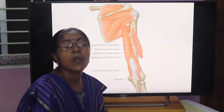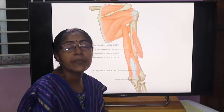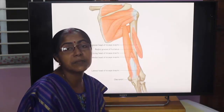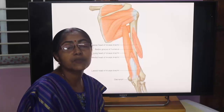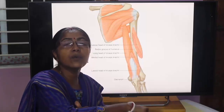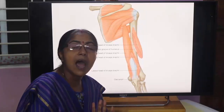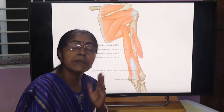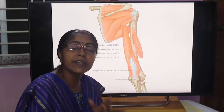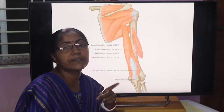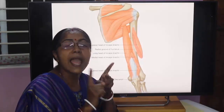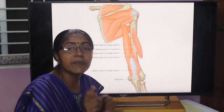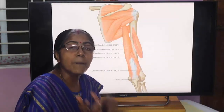What do you mean by the arm? The arm is the part of the superior extremity which extends from the shoulder to the elbow. The bone of the arm is the humerus. The arm is divided into two compartments: anterior compartment and posterior compartment.